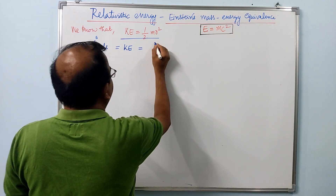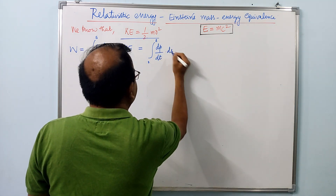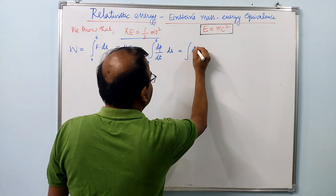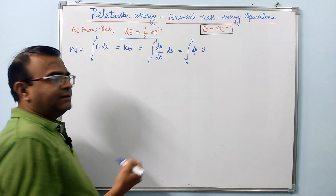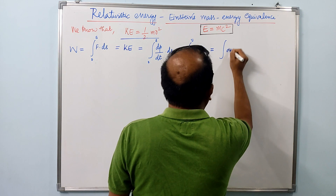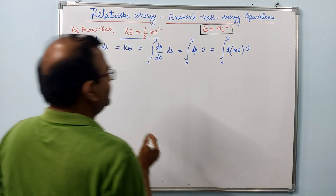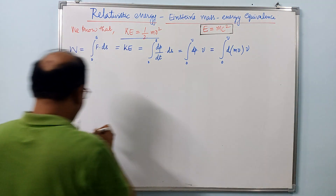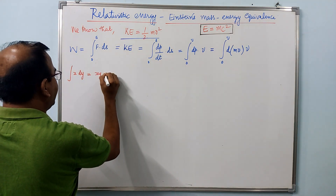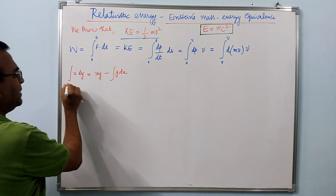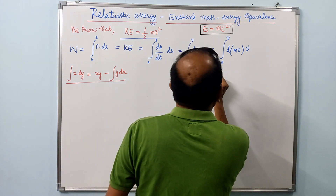From this condition, we can derive kinetic energy as the integral from 0 to s of the force, which is the rate of change of momentum, so we write dp/dt times ds. Since ds/dt is velocity, we write dp·v from 0 to v, because we are changing the integrand. The momentum expression is mv times v. We use the integration by parts formula: integral of x dy = x·y minus integral of y dx.